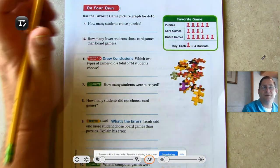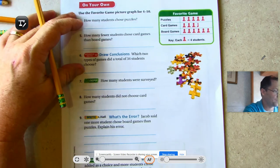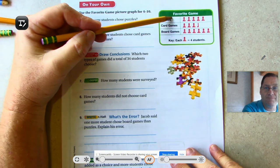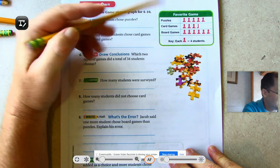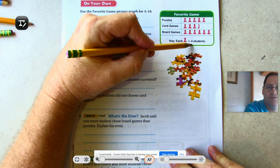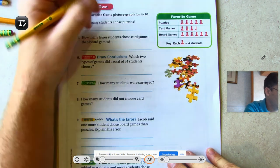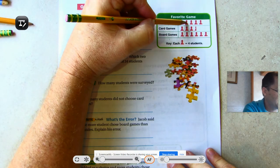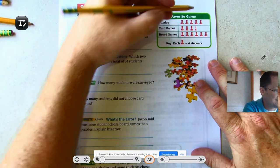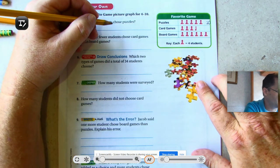Use the favorite game picture graph for numbers four through ten. So we have our favorite games: puzzles, card games, and board games. Each game piece stands for four students. So it's not 1, 2, 3, 4, 5 people who like puzzles. It's 4, 8, 12, 16, 20.